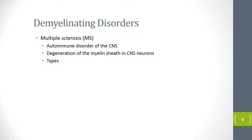MS is an autoimmune disorder in which lymphocytic invasion of the lesion occurs when demyelination takes place. There is evidence of antibody-mediated damage to myelin proteins — the proteins that are vital parts of the myelin sheath.